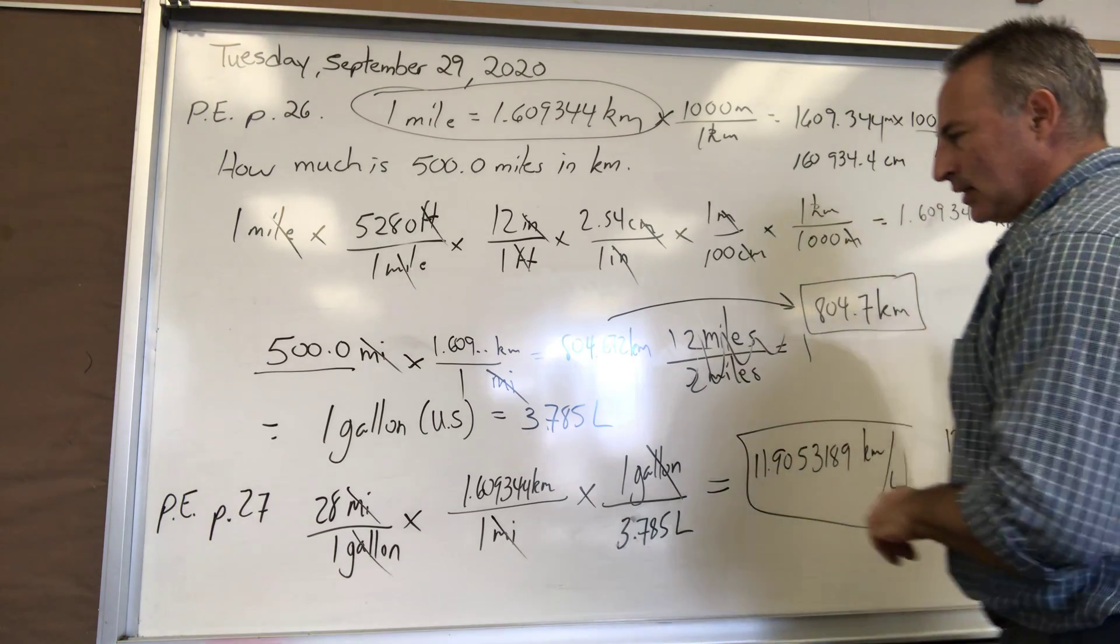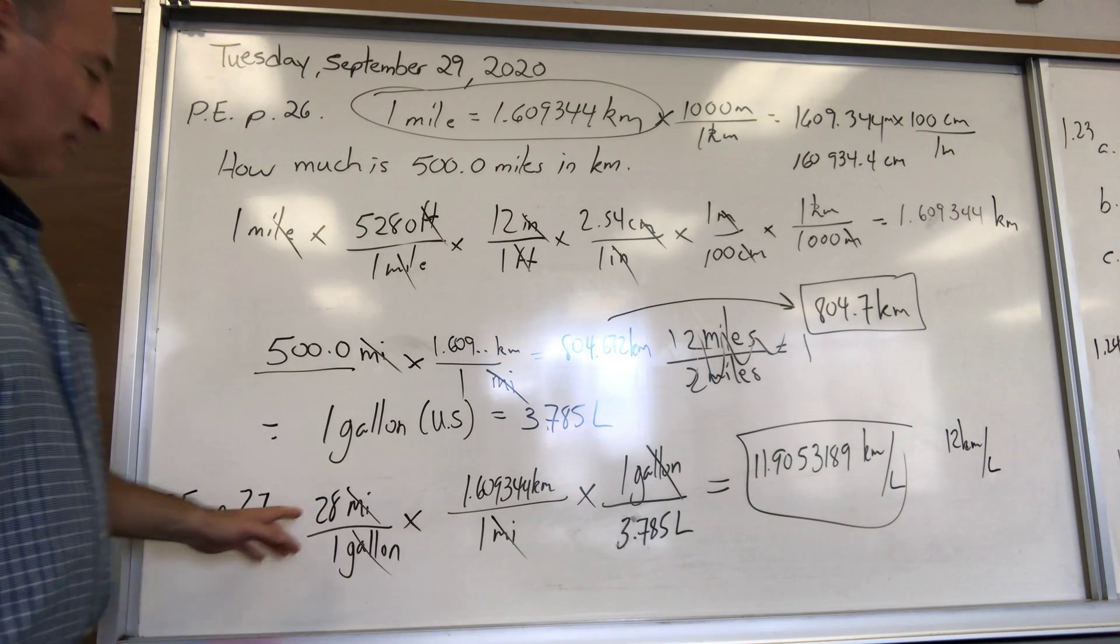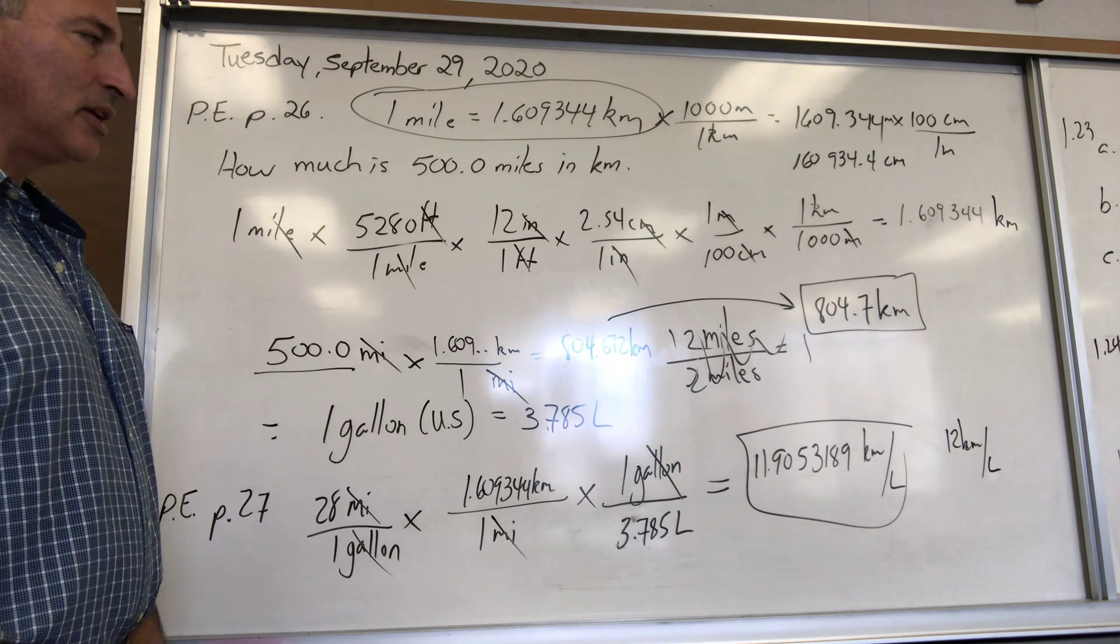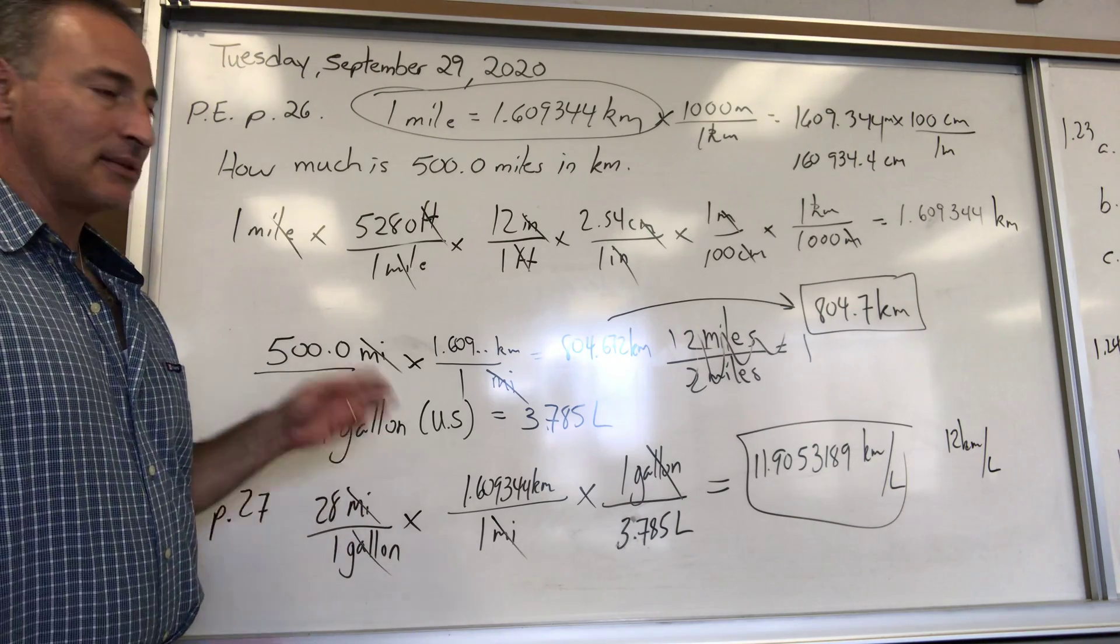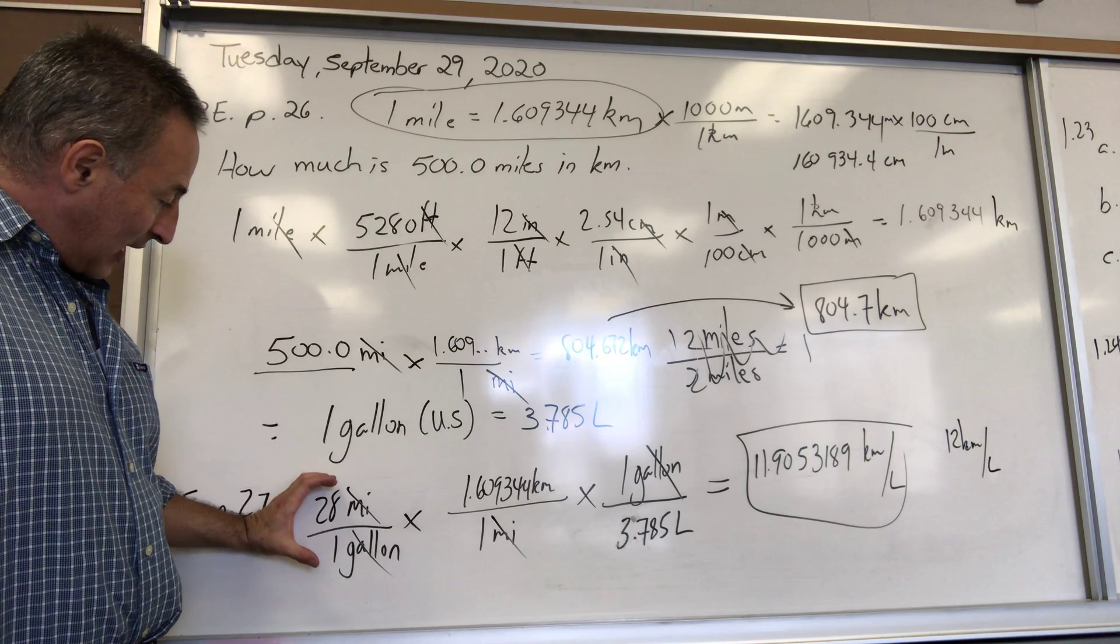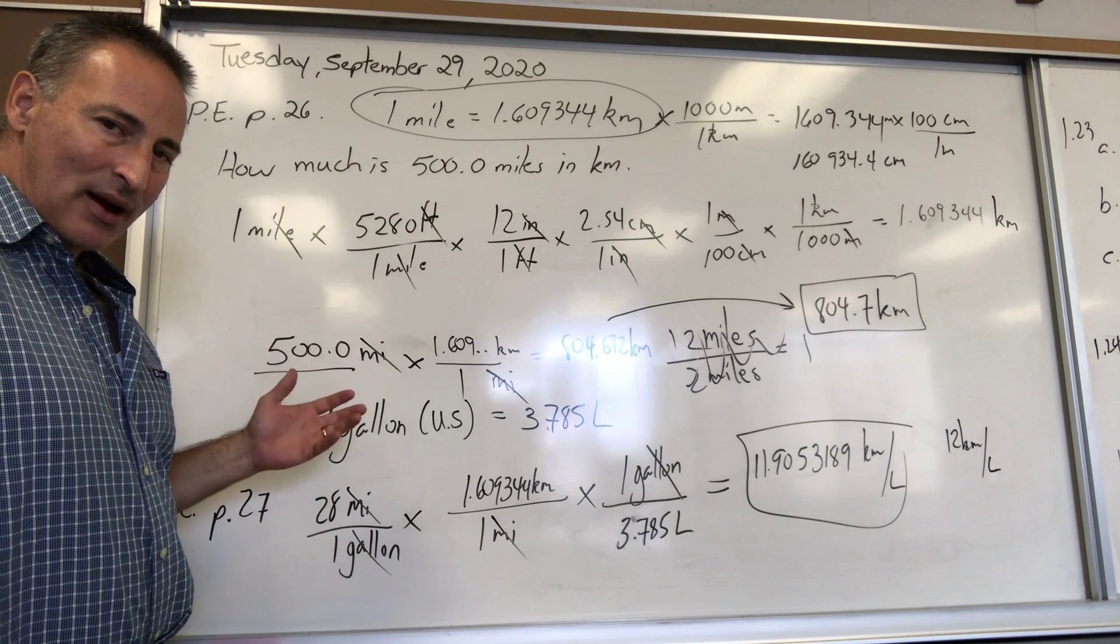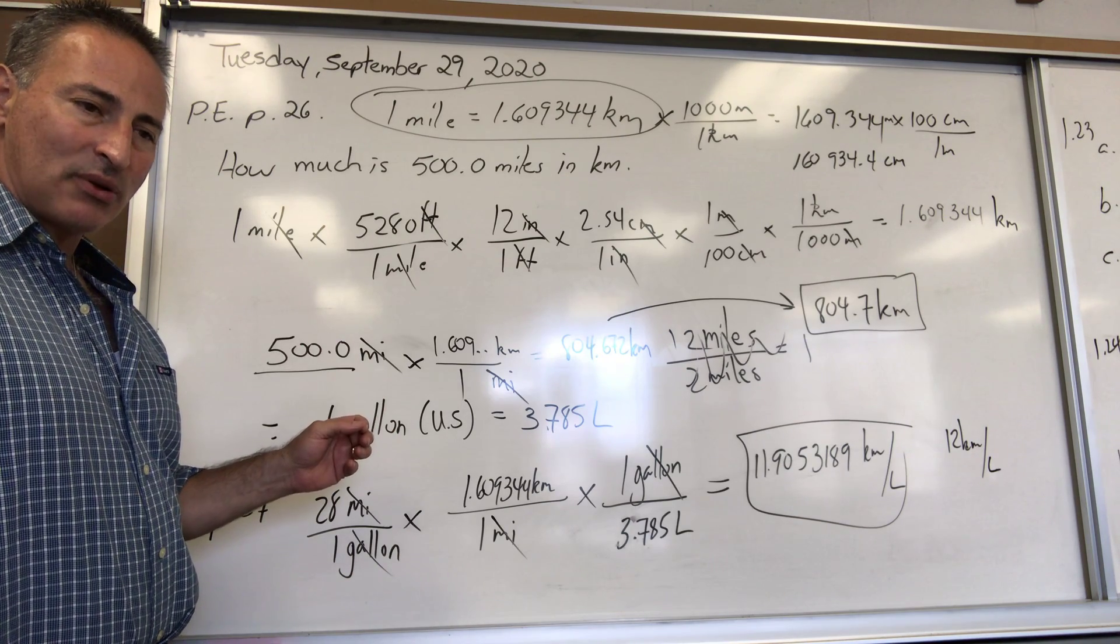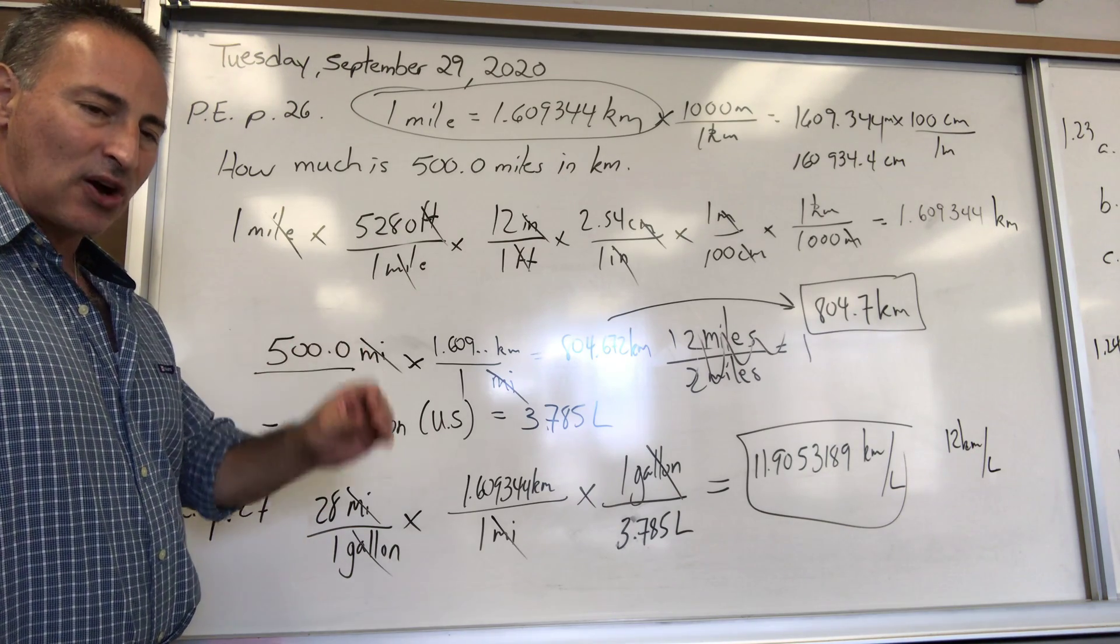The next question on practice example 27 says convert 28 miles per gallon into kilometers per liter. So it's a double conversion. The trick to solving these is you break them down into smaller pieces. You do one piece at a time. It's intimidating when you see all this, but you start here. You can start anywhere, but you do one piece at a time.